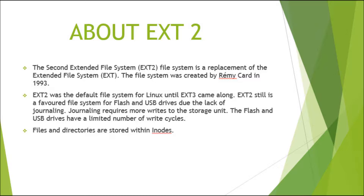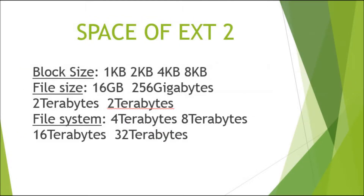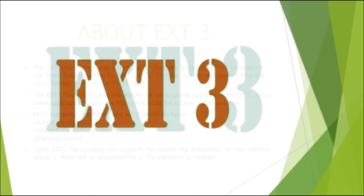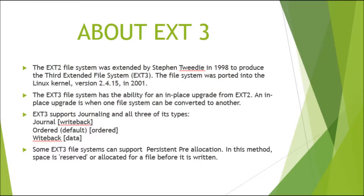Flash and USB drives have a limited number of write cycles. Files and directories are stored within inodes. The ext2 block sizes are 1KB, 2KB, 4KB, and 8KB. File sizes range from 16GB, 256GB, to 2TB, with file system sizes of 4TB, 8TB, 16TB, and 32TB.